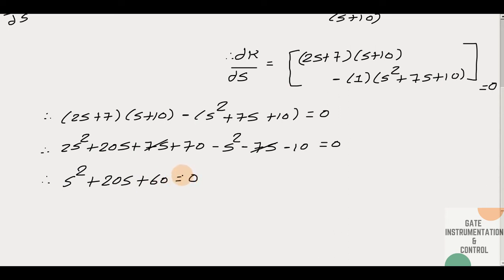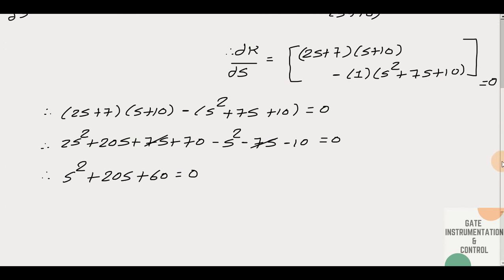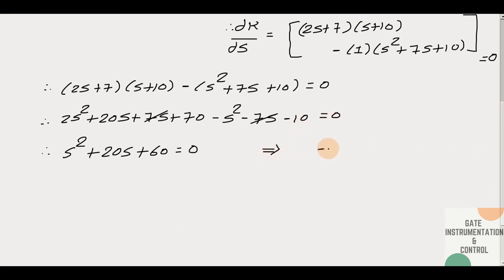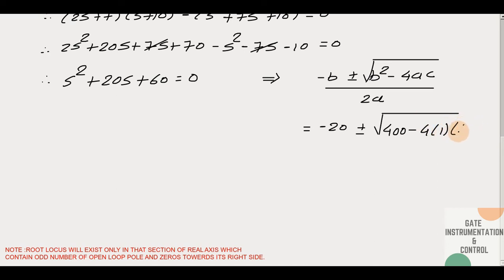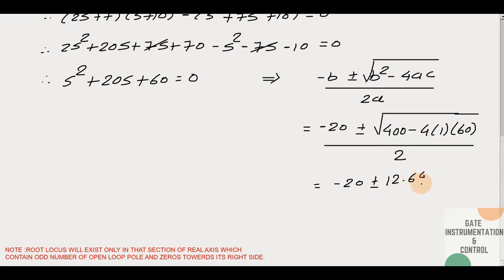So we have s² + 20s + 60 = 0. To find the roots, we use the quadratic formula: s = (−b ± √(b²−4ac)) / 2a. Here b = 20, a = 1, c = 60. So s = (−20 ± √(400 − 240)) / 2, which gives s = (−20 ± 12.64) / 2.